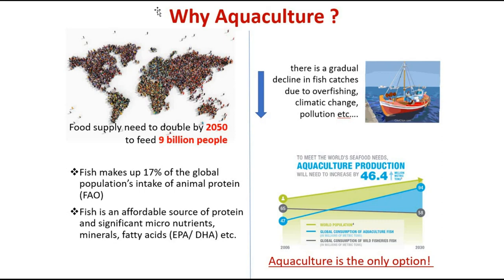We cannot expect more from wild oceans to meet the demand. So aquaculture is the only option for the future in meeting fish demand for the increasing population. Fish is also an affordable source of protein — there are varieties of fish in freshwater, brackish water, and the sea. Fish is found to be a healthier food, rich in omega-3 fatty acids and minerals. For example, with COVID-related health recommendations, seafood — particularly shrimp — is rich in zinc content, which boosts immunity.